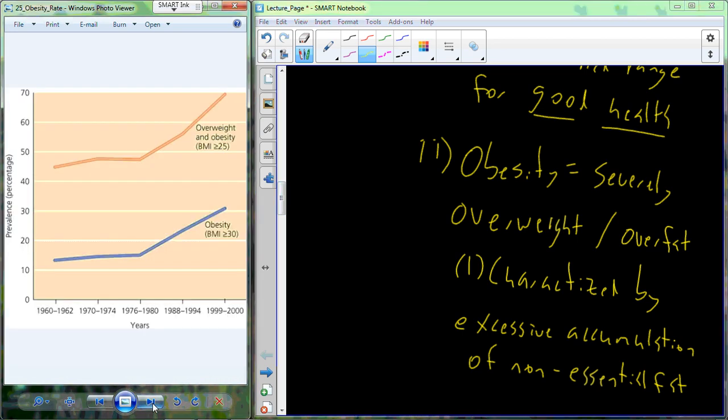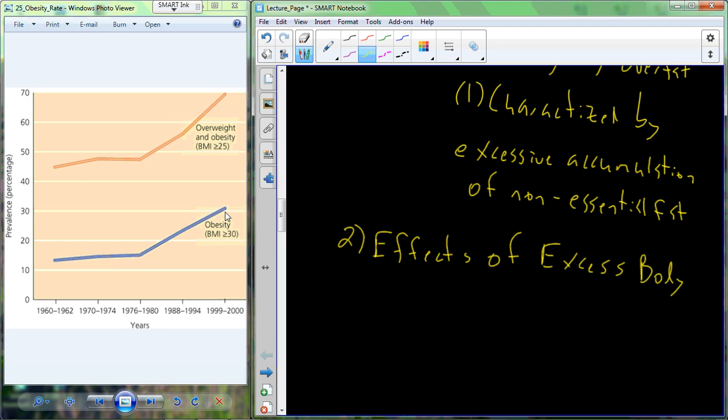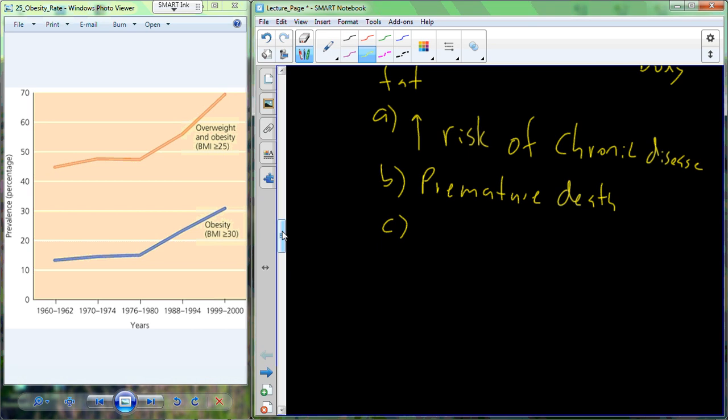Now currently in the United States, you can see in this figure from the 1960s to 2000, that we've had an increase in both overweightness and obesity. Now this is a major problem because there are some adverse effects to having this excess body fat. Individuals with excess body fat, especially those who remain physically inactive, are at much higher risks for chronic diseases and higher risk for premature death.